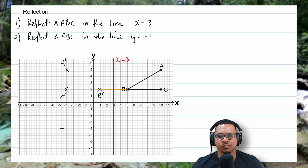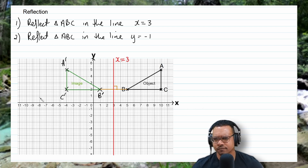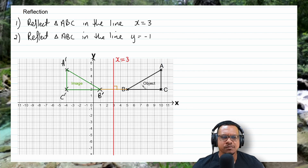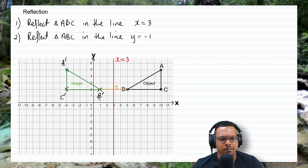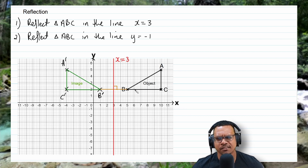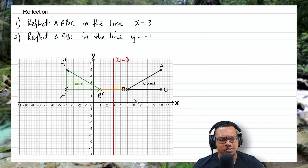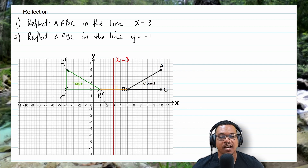Notice the object and image are the same size, but the orientation is different — this is what we call lateral inversion. That's the key property of a reflection: the object and the image are laterally inverted.